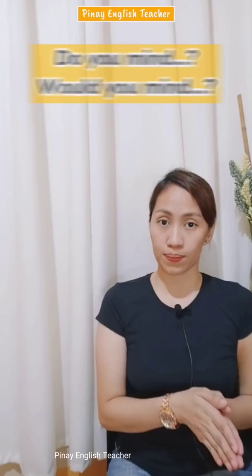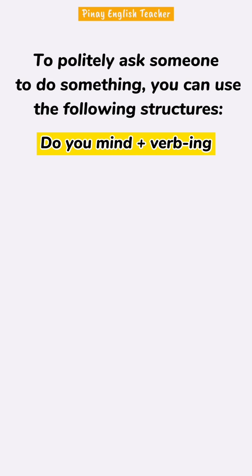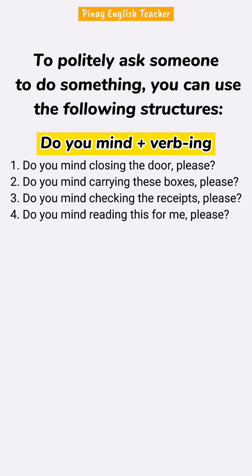To politely ask someone to do something, you can use the following structures. The first one is 'Do you mind?' plus a verb in the ING form. Examples: Do you mind closing the door, please? Do you mind carrying these boxes, please? Do you mind checking the receipts, please? Do you mind reading this for me, please?